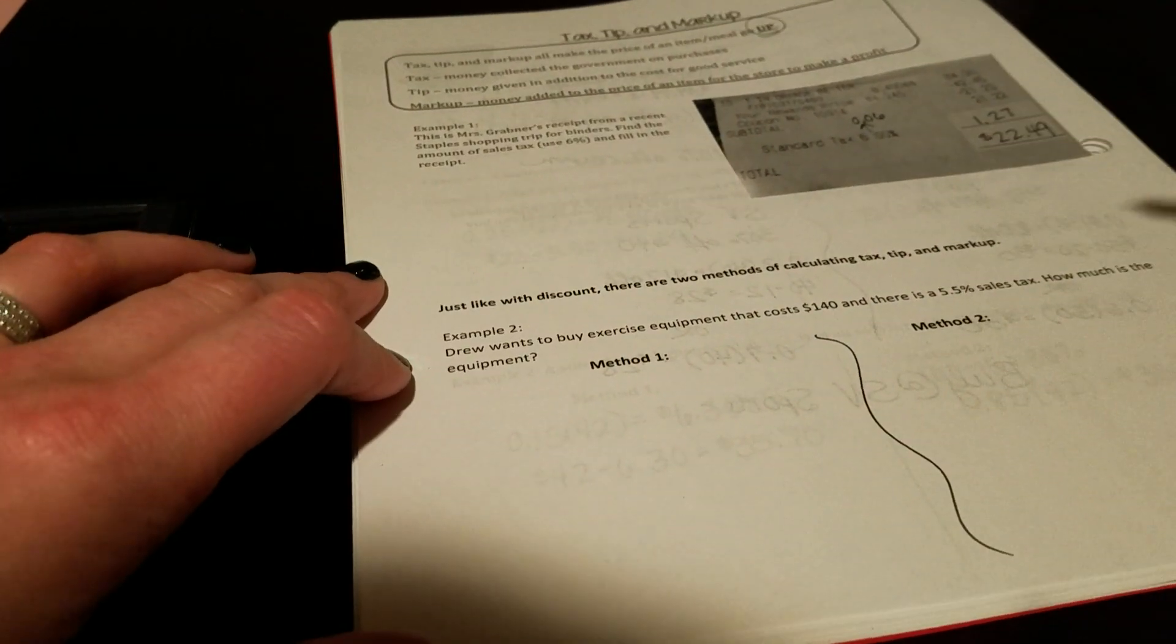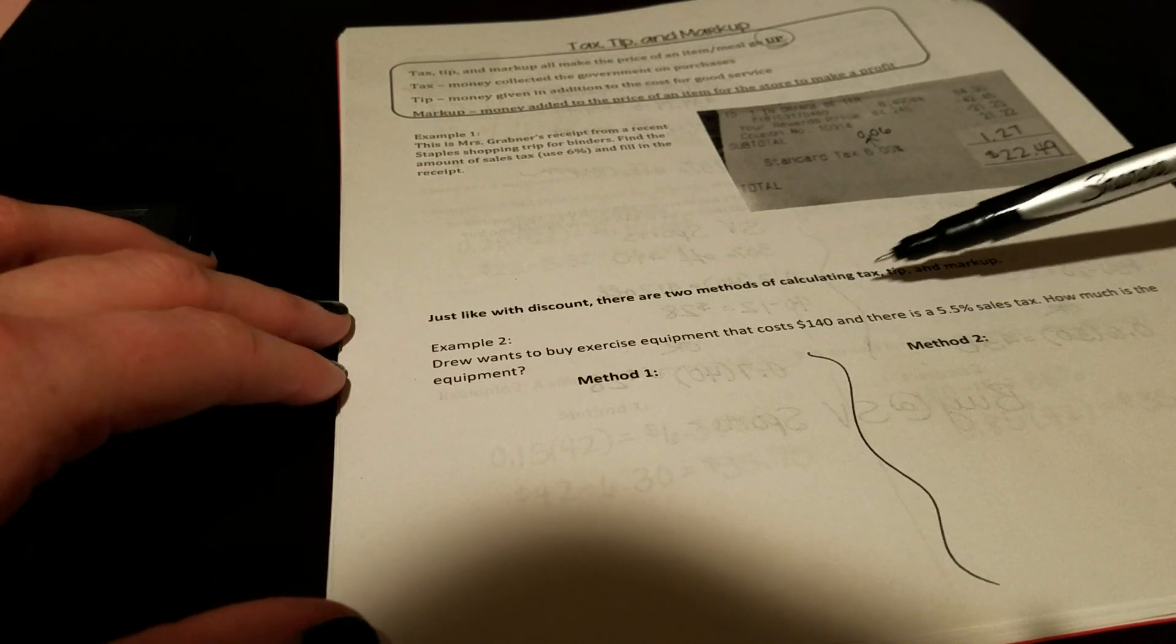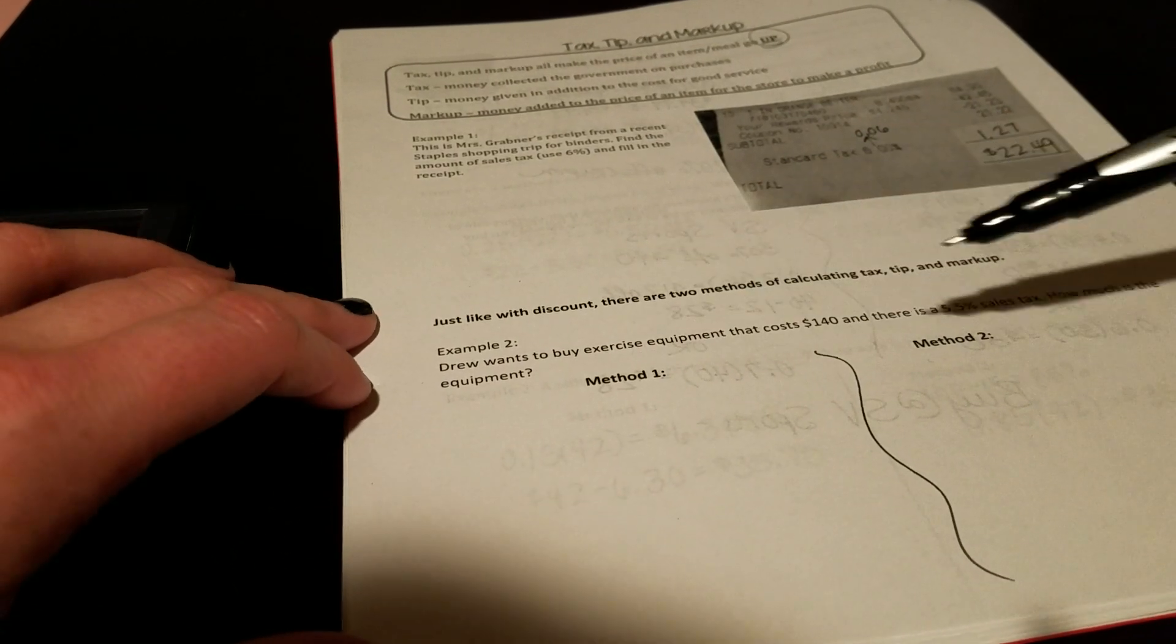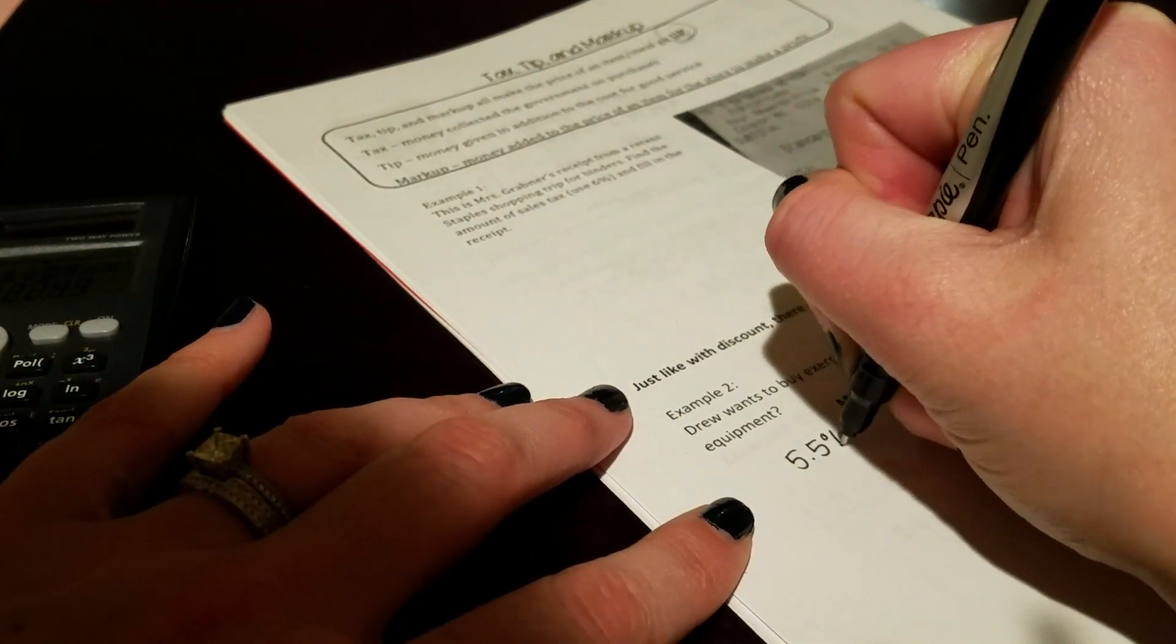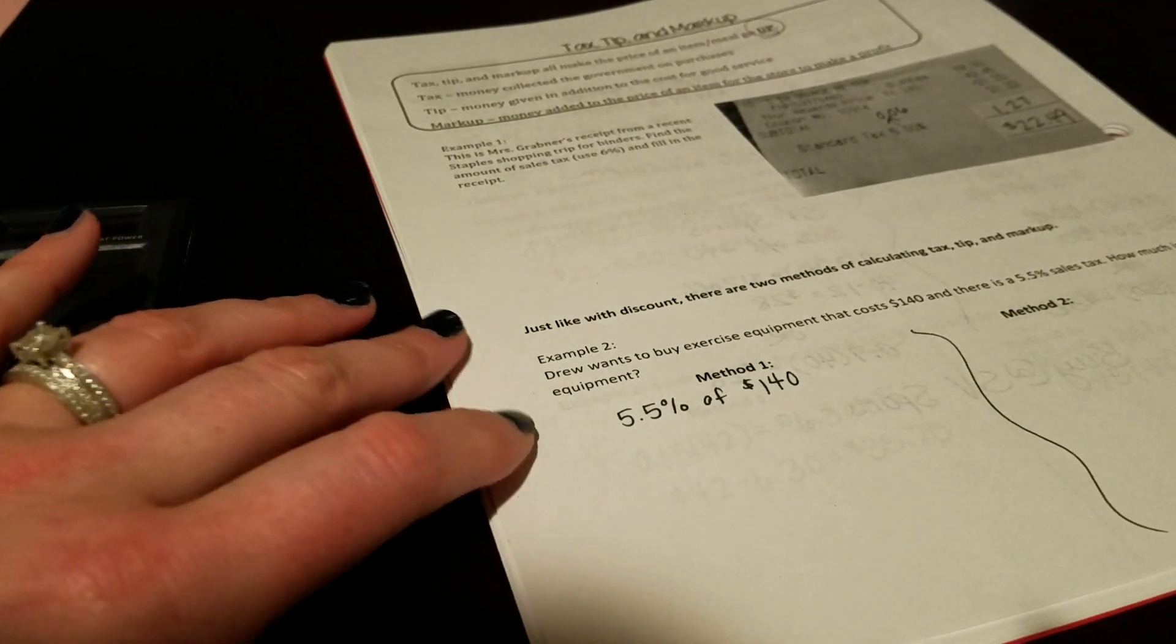So if we want to do example 2, it says Drew wants to buy exercise equipment that costs $140 and there's a 5.5% sales tax. How much is the equipment? So we first need to calculate if we're using method 1, 5.5% of $140.